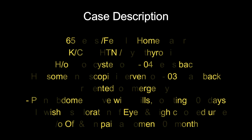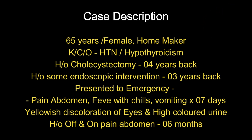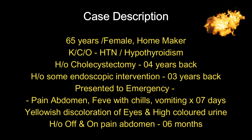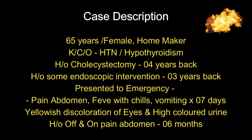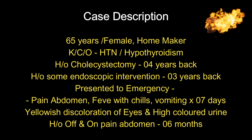This was a case of a 65-year-old female homemaker who was a known case of hypertension and hypothyroidism. She had a history of laparoscopic cholecystectomy four years back, and one year after that surgery she underwent some endoscopic intervention. The details and records of that procedure were not available for review. She presented to the emergency department with pain in the abdomen, fever with chills, and vomiting for the last seven days, along with yellowish discoloration of eyes and high-colored urine. The pain had been present for the last six months.